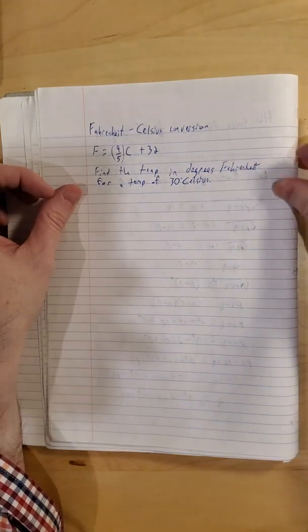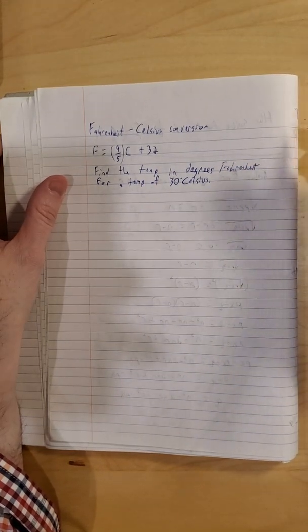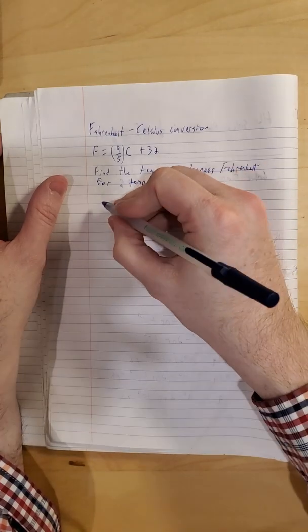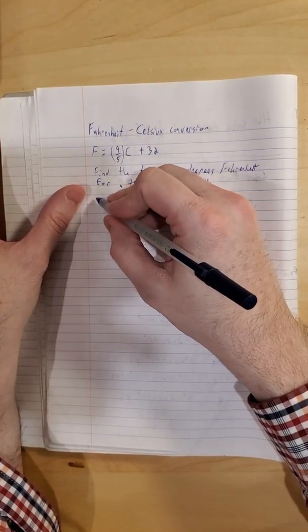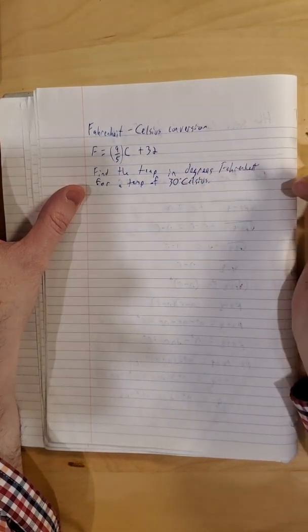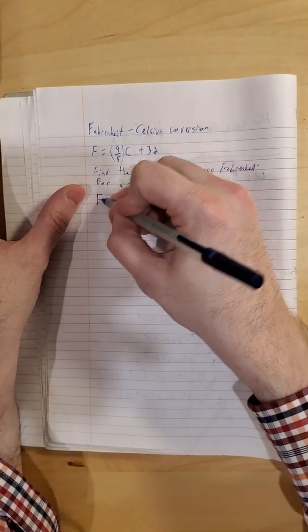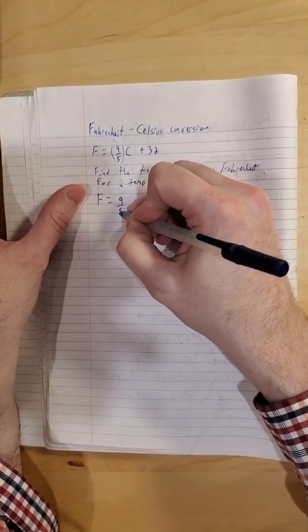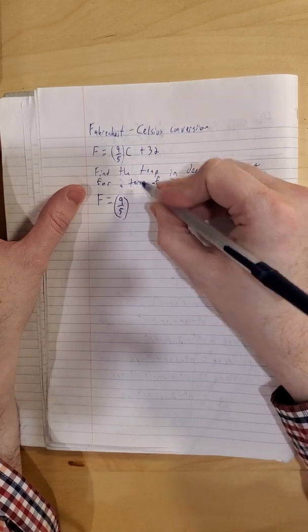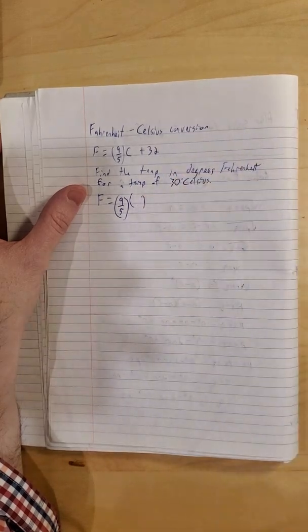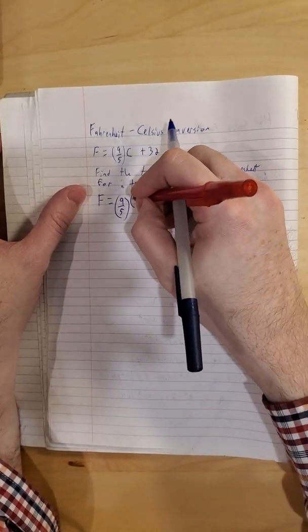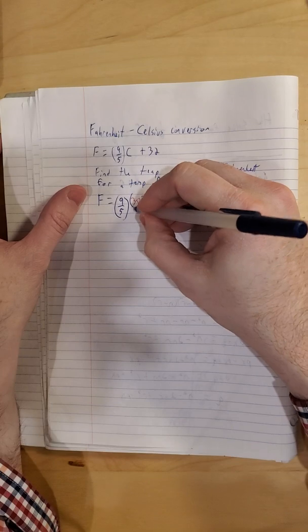If they give us a formula and give us a number, really all we're doing is substitution and either just simplifying or solving. Fahrenheit they didn't give that to us, that stays a variable. Nine-fifths is part of the formula, that's just always going to be there. Celsius though, they have some number, replace it with parentheses and we'll plug in that 30 they handed us.